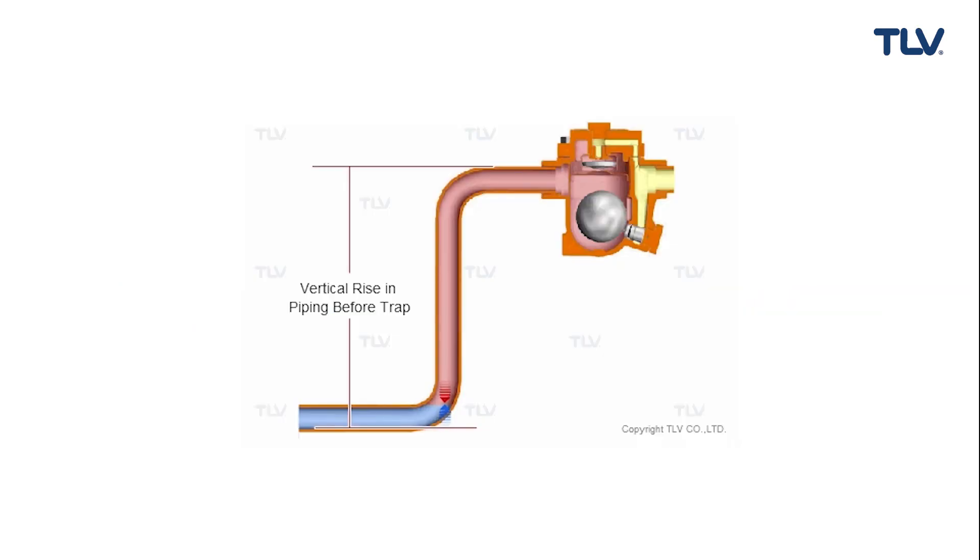Steam traps should not be installed at the top of vertical sections of piping, because this can lead to steam locking. Piping configuration can cause steam to be locked within a trap and impede condensate discharge.